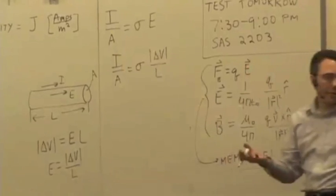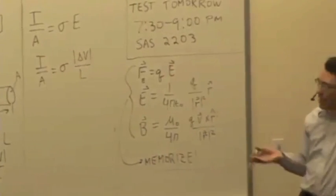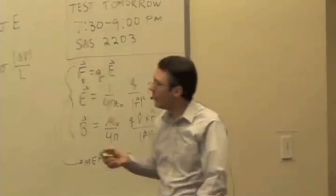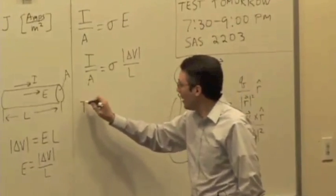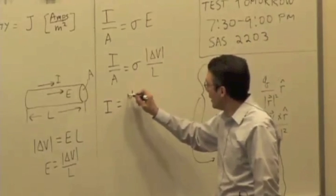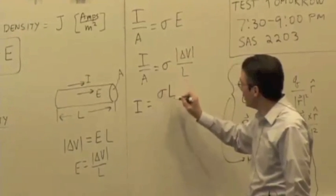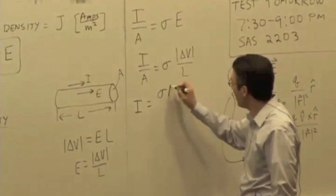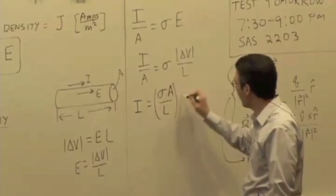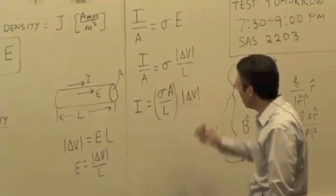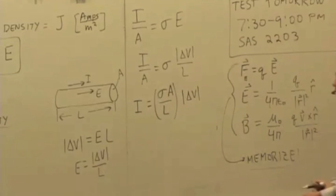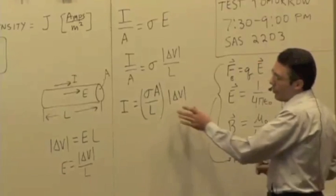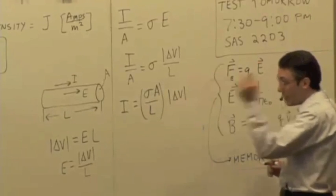Current, I can also measure pretty easily by just putting an ammeter in the circuit. Get a reading there. So let me isolate current on one side, and we have sigma times A over L times delta V. So this is saying that the amount of current I'm going to get is going to be proportional to the potential difference across that wire.